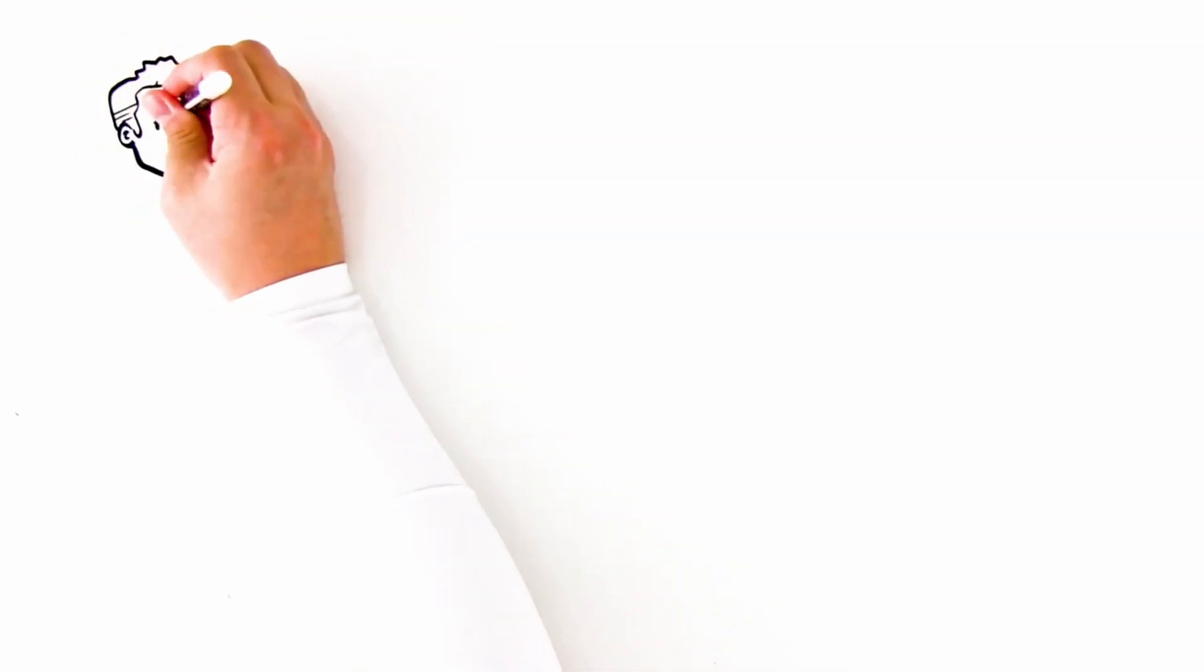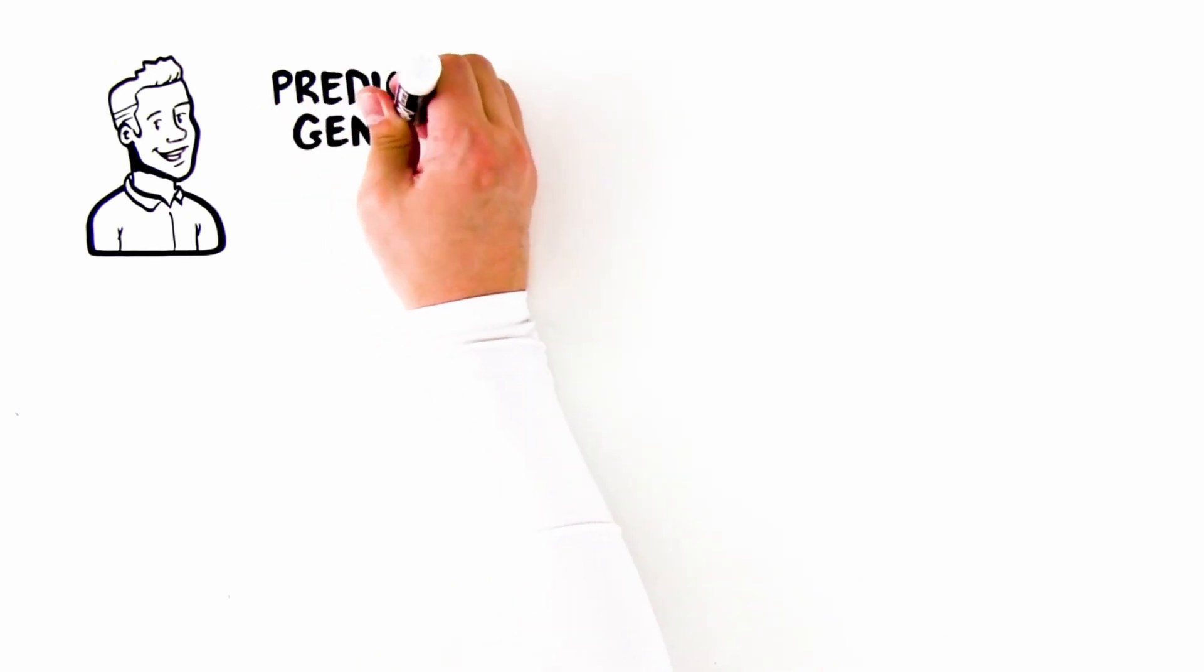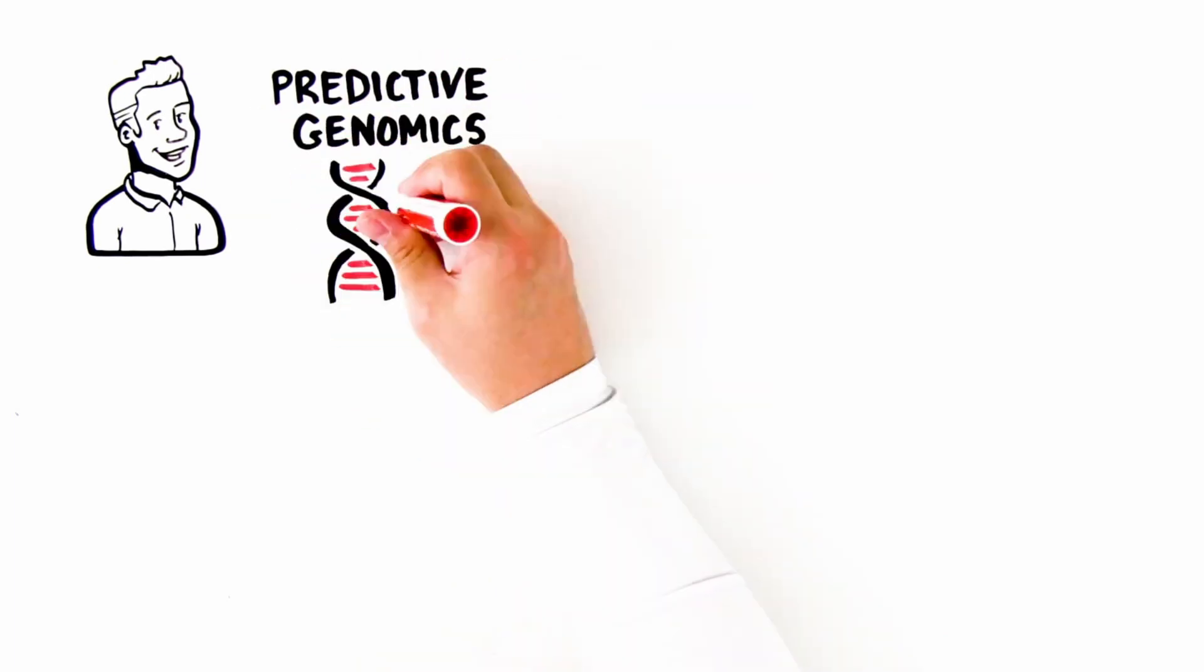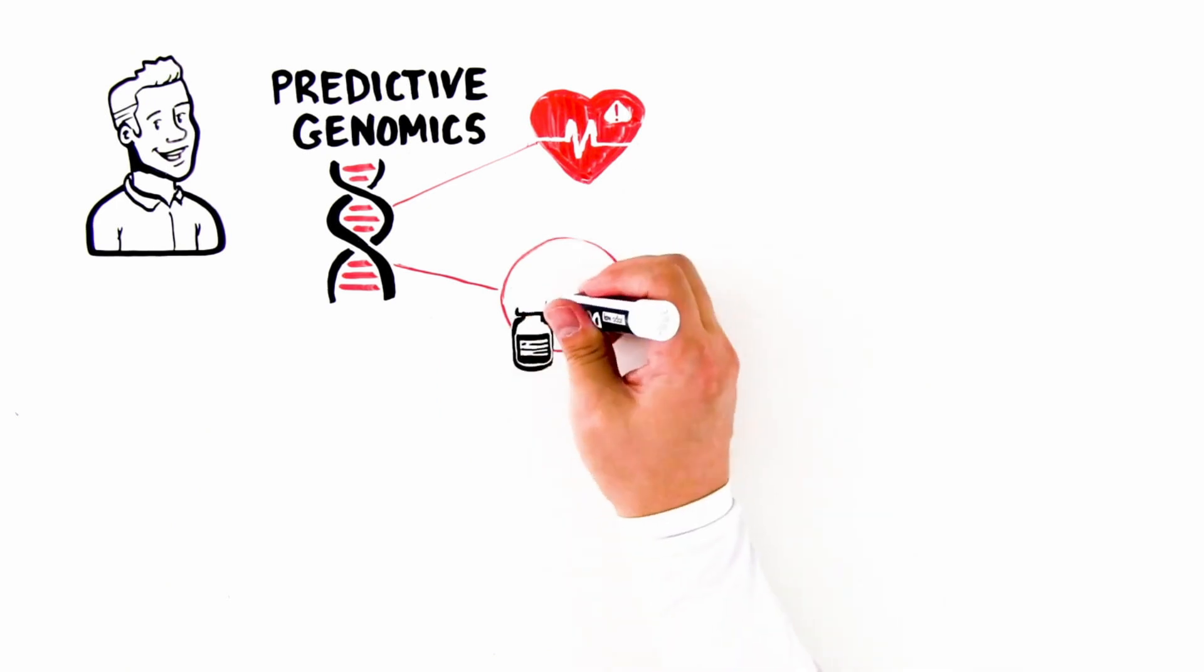Predictive genomics is the science of using knowledge about an individual's genomic data to predict his or her risk of developing specific diseases or experiencing adverse drug reactions to medications.